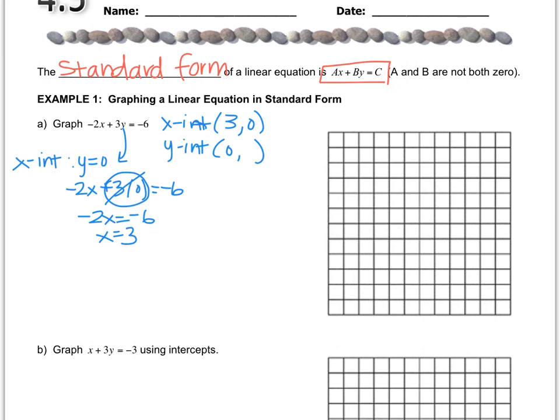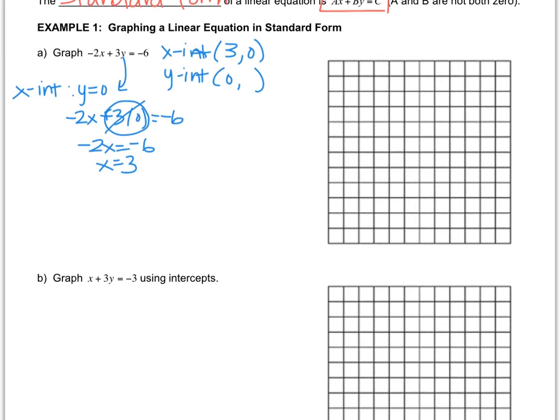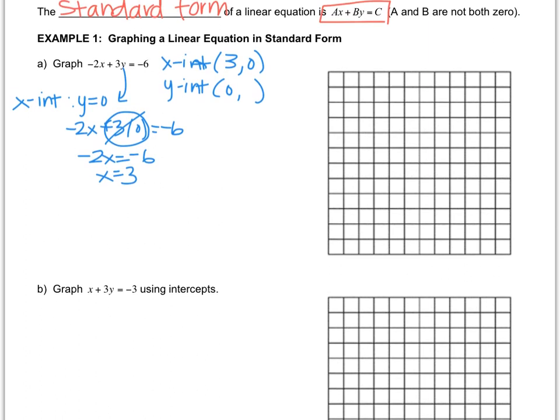Now I'm gonna find the y-intercept by doing something very similar, but now I'm going to make the x value equal to 0. So I write the equation negative 2 times 0 plus 3y equals negative 6. Now instead of x I put 0, so this cancels out and I get 3y equals negative 6. The y value is negative 2. So the y-intercept is 0, negative 2.